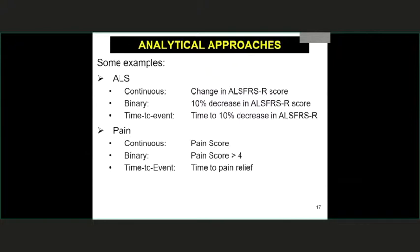For example, in an ALS study, you might look at the continuous change in ALSFRS score, or use it as binary — a 10% decrease or not — or as time to event — time to a 10% decrease in ALSFRS score. Each of those will have different power even under similar assumptions. You can come up with any disease area and there are often scores that you could group in these types of settings.